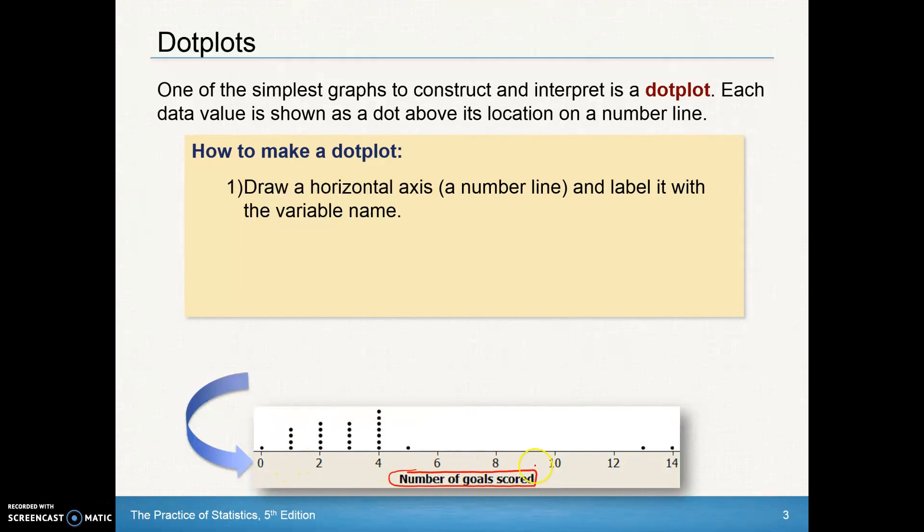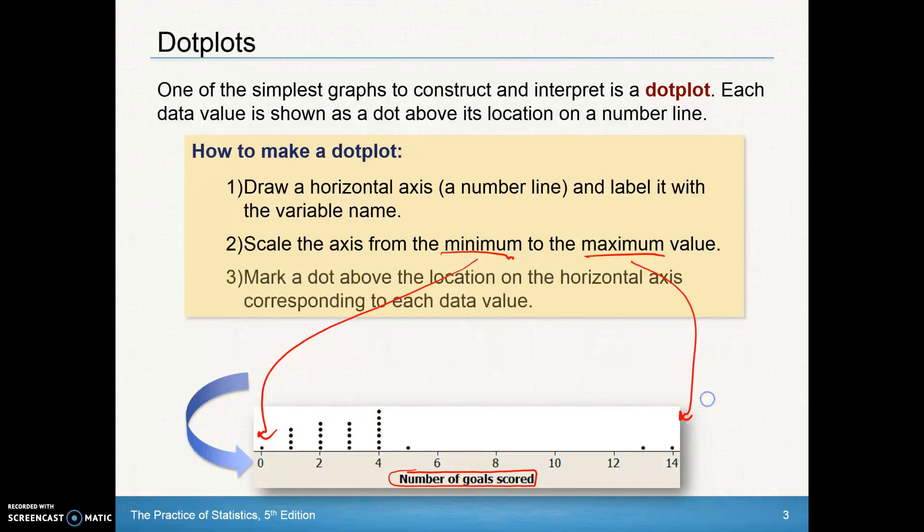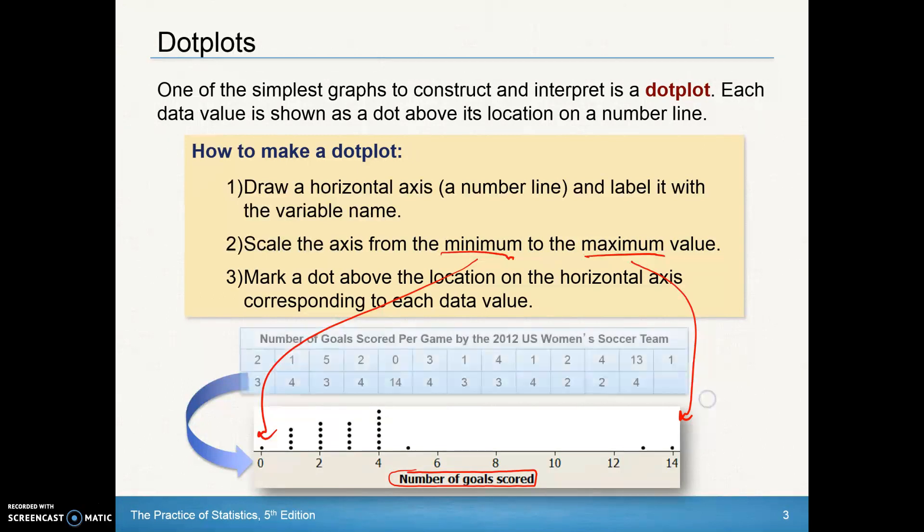The scale should be equal as we go along, whether you count by twos, fives, ones, just make sure you do the spacing equally. The scale would start at the lowest value in the data set and end at the highest value of the data set. You do not need to start the dot plot at zero. It really starts at the minimum and then the maximum value. The minimum is down here, the maximum value up here.